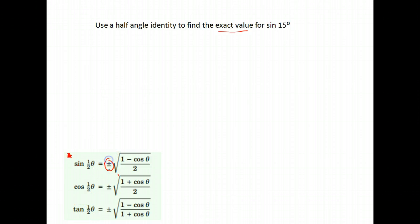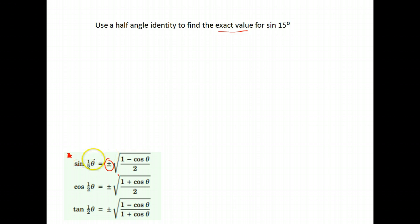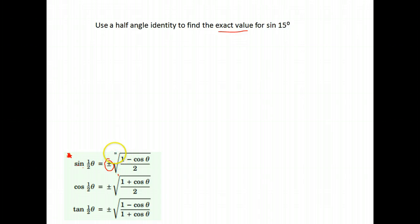You may ask why the plus or minus. Well, when we're halving an angle, we could end up in a different quadrant. So you have to pay attention to whether sine is positive or negative in the quadrant that your resulting angle ends up in. If it's in a quadrant where sine is positive, your answer would be positive. If it's a quadrant where sine is negative, your answer would be negative.